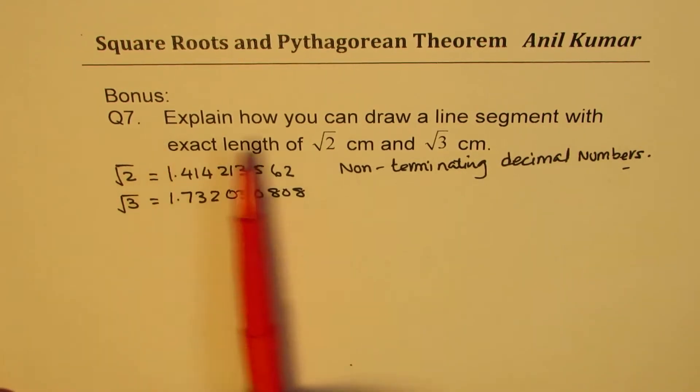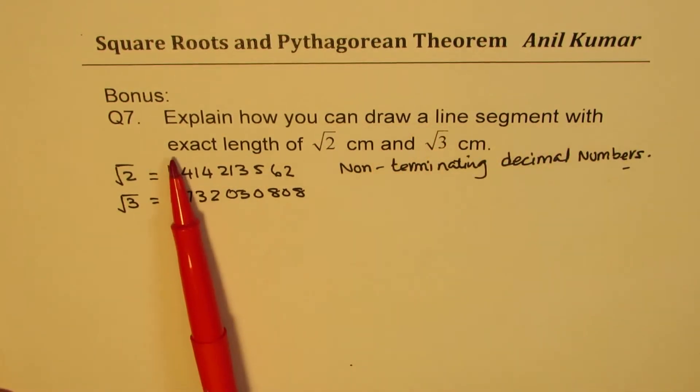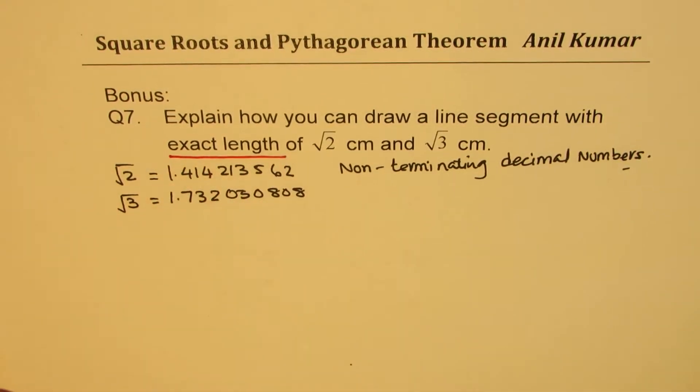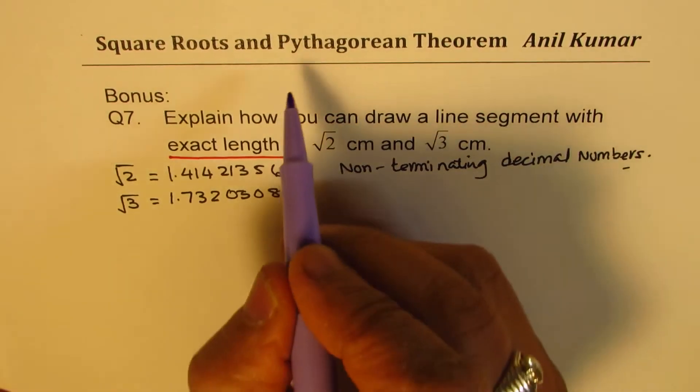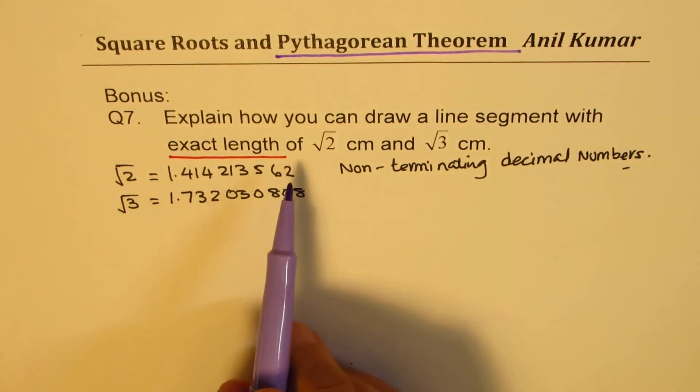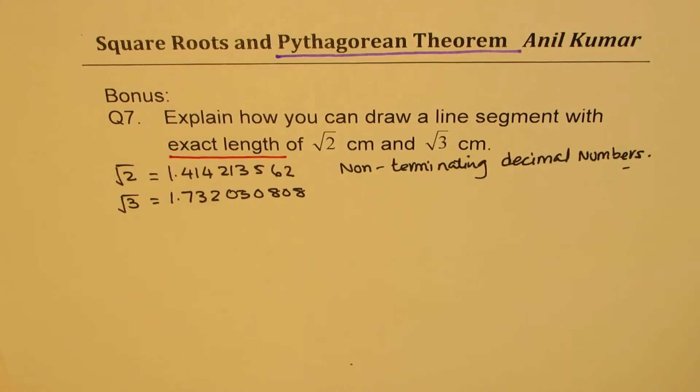But the question says, draw a line segment with exact length of square root 2. How will you do so? Now, Pythagorean theorem can be used to draw exact length of square root 2. Let me show you how. I'll make very approximate sketches here to share with you the concept.